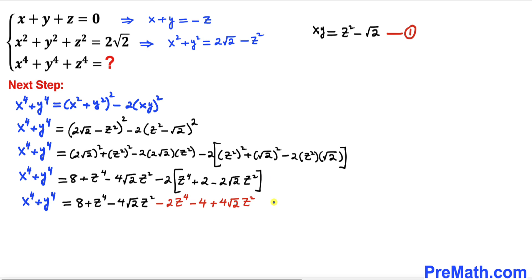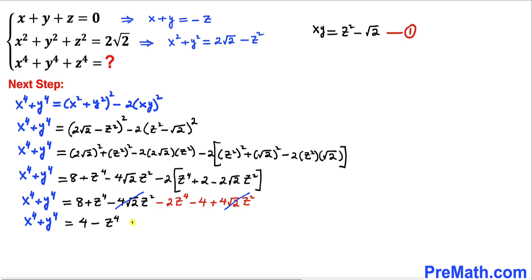As you can see, the negative 4 times square root of 2 times z squared and the positive 4 times square root of 2 times z squared cancel each other out. Then 8 minus 4 gives us 4, and we are left with negative z to the power 4. So x to the power 4 plus y to the power 4 equals 4 plus negative z to the power 4. Moving this negative z to the power 4 to the left hand side, it becomes positive z to the power 4.